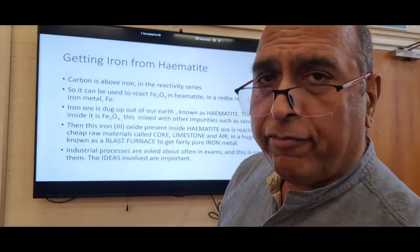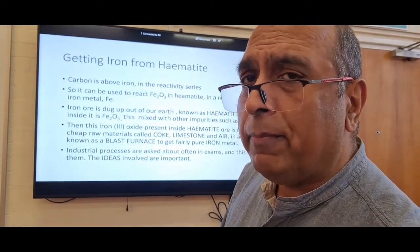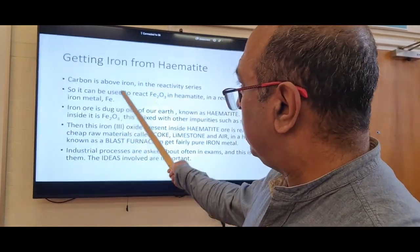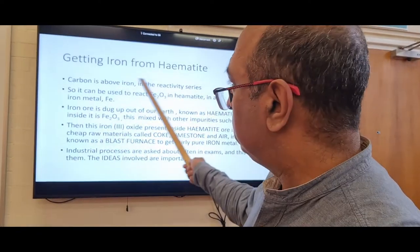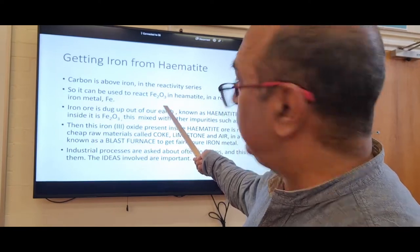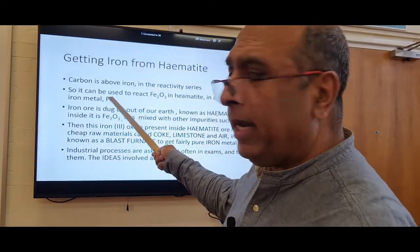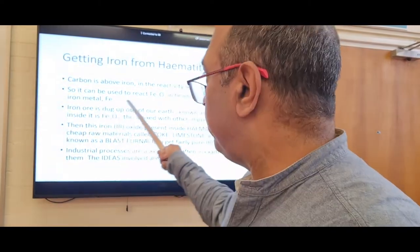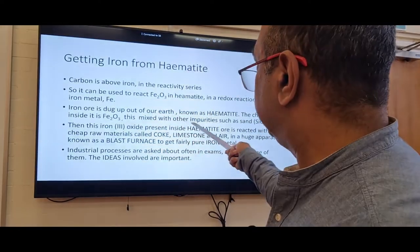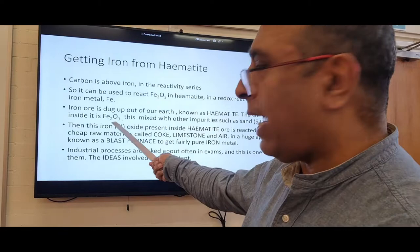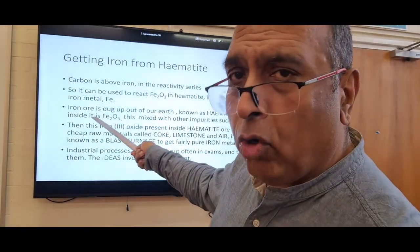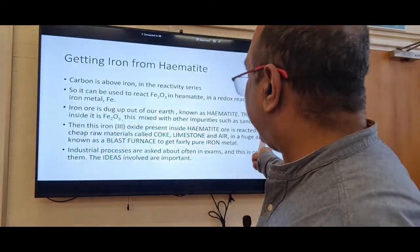Now let's look at getting iron from hematite — the blast furnace. Carbon is above iron in the reactivity series, so it can be used to react with the iron oxide in hematite in a redox reaction to separate the iron from oxygen. The iron ore hematite is dug from the earth — its chemical is Fe₂O₃, iron(III) oxide — and it's mixed with impurities like sand.